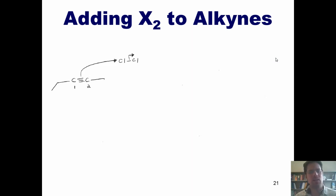Now, you might ask yourself, to which carbon does the chlorine bond? To carbon one or carbon two? Well, in this particular case, it doesn't matter, because the resulting carbocation would be equally stable, no matter which of the two carbons it bonded to.